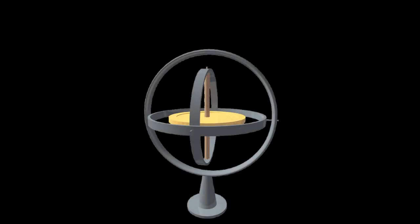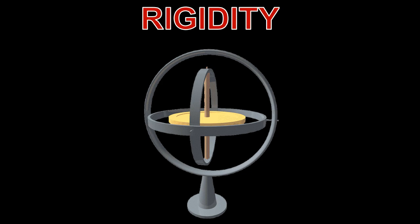The gyroscope has two properties that are useful for flight instruments. The first is rigidity. Rigidity is the principle that a gyroscope remains in a fixed position in the plane in which it is spinning. In other words, it will try and remain in the same position, relative to space, whilst the rotor is spinning.